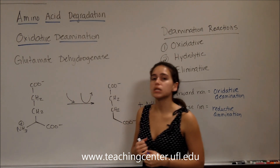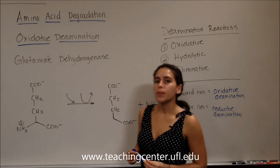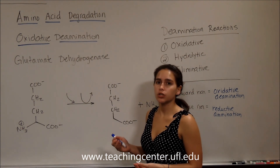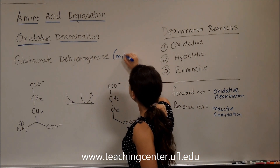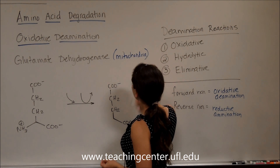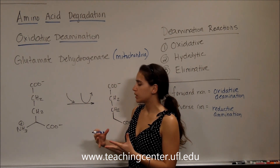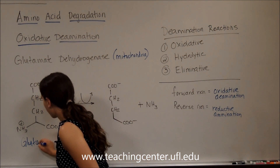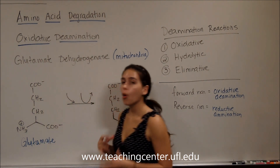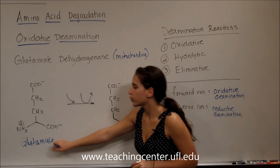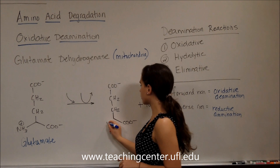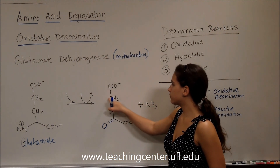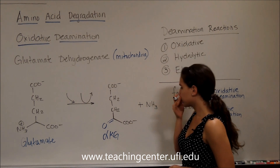Oxidative deamination is going to use NAD+ or FAD+, and it does so by using the enzyme glutamate dehydrogenase. It makes sense that glutamate dehydrogenase, because it's going to be used in the urea cycle, is located in the mitochondria. For this reaction, we start with glutamate. The whole point is to deaminate — we take off the NH3 and replace it with a double bond to oxygen, yielding alpha-ketoglutarate and NH3.